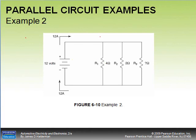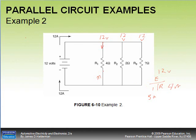We know there should be 12 volts across each branch. Using Ohm's law, voltage divided by resistance gives amperage. For the first branch with 4 ohms: 12 divided by 4 equals 3 amps in that branch.